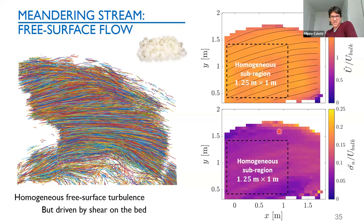The PDF of velocity fluctuations for tracers shows the same Gaussian shape and intermittent accelerations as in the laboratory. However, for larger particles — the discs and rods — the intermittency in the acceleration PDF is reduced for larger and larger particles. This is already a hint that these large particles behave like large finite-size particles in turbulence: they filter out the intense intermittent velocity fluctuations — what we normally call inertial filtering.